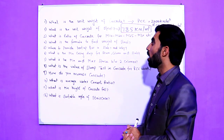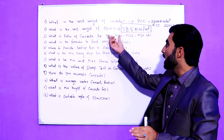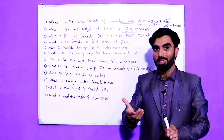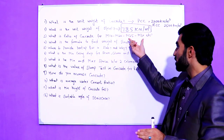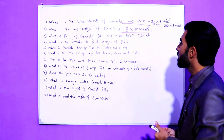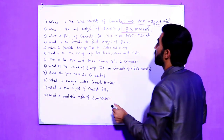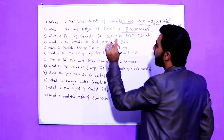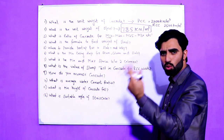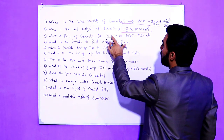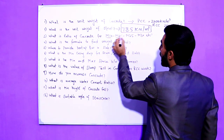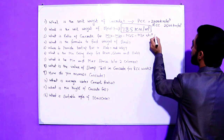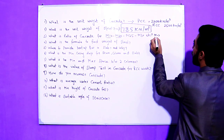The third question is: what is the ratio of concrete for M10, M20, M25, M30, etc.? They may ask one or two of these. For example, if they ask for M10, the answer is 1:3:6 — 1 is cement, 3 is sand, and 6 is coarse aggregate.